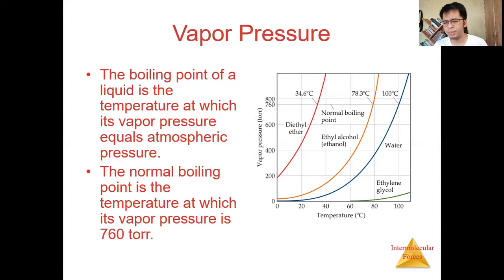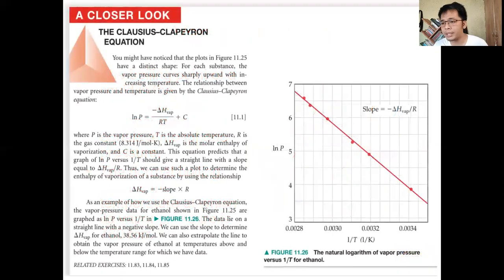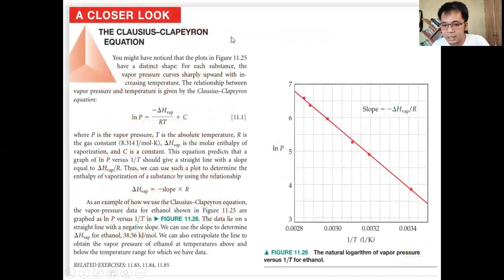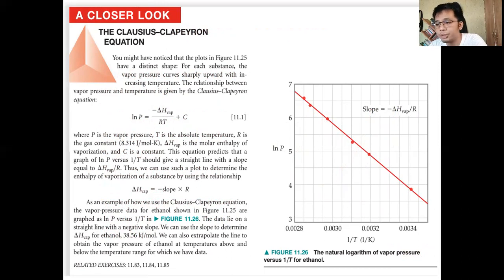So why are we discussing vapor pressure? Because it is related to our Clausius-Clapeyron equation. The significance of the Clausius-Clapeyron equation is that we can obtain the enthalpy of vaporization of a liquid. We use the Clausius-Clapeyron equation by manipulating data points that we plot on our graph. As you can see, the curve here is exponential or logarithmic.